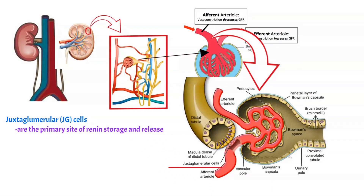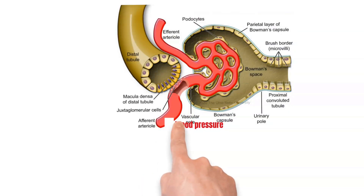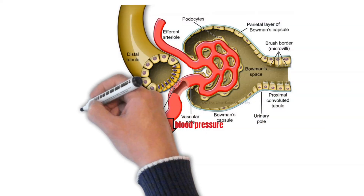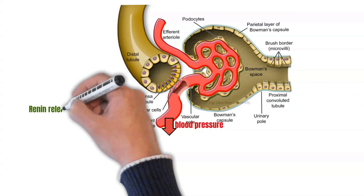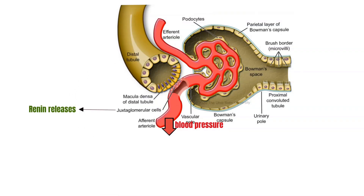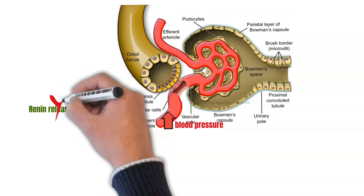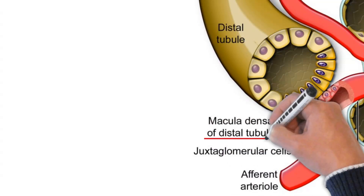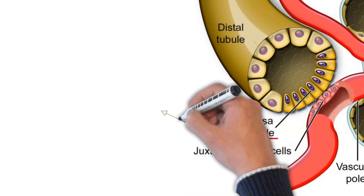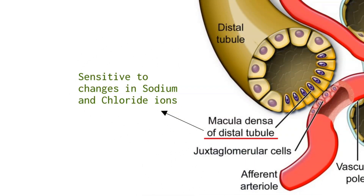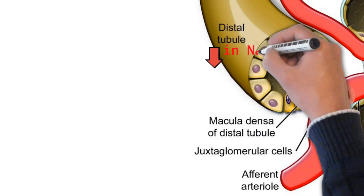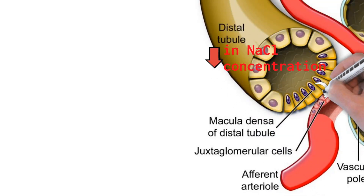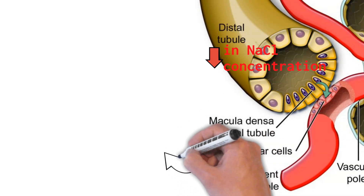Juxtaglomerular cells are the primary site of renin storage and release. When there is a reduction of pressure in these arterioles due to decreased renal blood flow or a decrease in systemic blood pressure, it causes the release of renin, whereas increased pressure inhibits renin release. Adjacent to the juxtaglomerular cells of the afferent arterioles lies another specialized cell type called macula densa. Macula densa are sensitive to changes of sodium and chloride ion concentration in the tubular fluid, so reduction in tubular sodium chloride stimulates renin release by the juxtaglomerular cells.